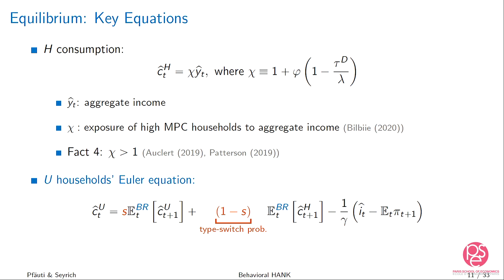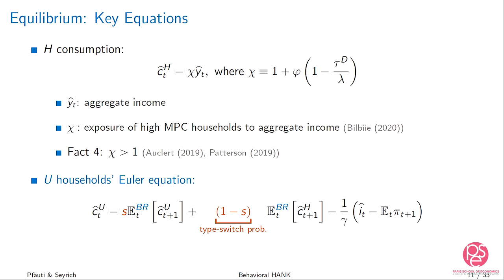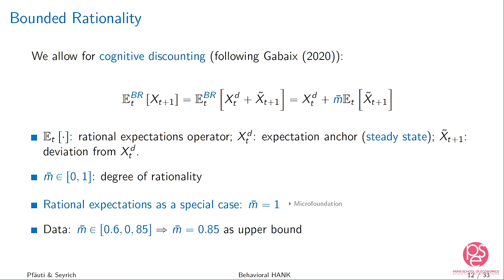The second key equation is the Euler equation of unconstrained households. It is standard — it depends on expected future consumption — but this is where the precautionary savings motive comes in. With probability one minus s, the unconstrained household expects to be hand-to-mouth next period, and then it's that household's consumption that matters for her decision. Bounded rationality enters through the expectations about future consumption states.